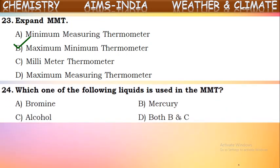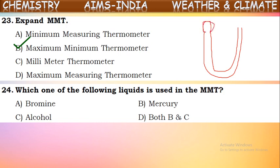Next question: which one of the following liquids is used in the MMT? In the maximum-minimum thermometer, two liquids are used. One bulb on each top — one bulb is filled with alcohol and here the tube contains mercury. So the two liquids used in the maximum-minimum thermometer are alcohol and mercury.